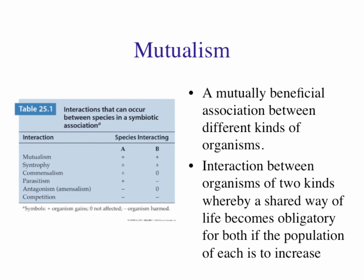When we look at these relationships, we can categorize them. Symbiosis is the relationship of two organisms—it doesn't tell you the nature of the relationship. We can use a table with organism A and organism B, where a plus indicates an organism is gaining, a minus indicates an organism is being harmed, and a zero means the organism is not being affected.